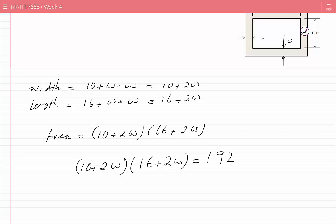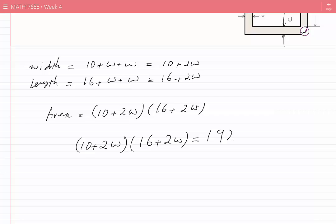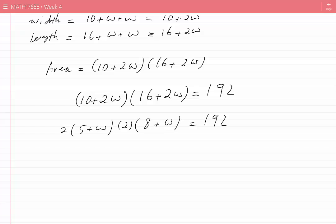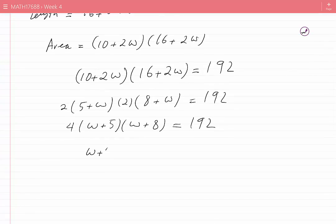Before I expand the expression on the left-hand side of this equation, I note that I can factor a 2 from each bracket. I would then have 2 times (5 plus W) times 2 times (8 plus W) equals 192. Now I can simplify this to 4 times (W plus 5) times (W plus 8). Dividing both sides by 4, I get (W plus 5) times (W plus 8) equals 48.